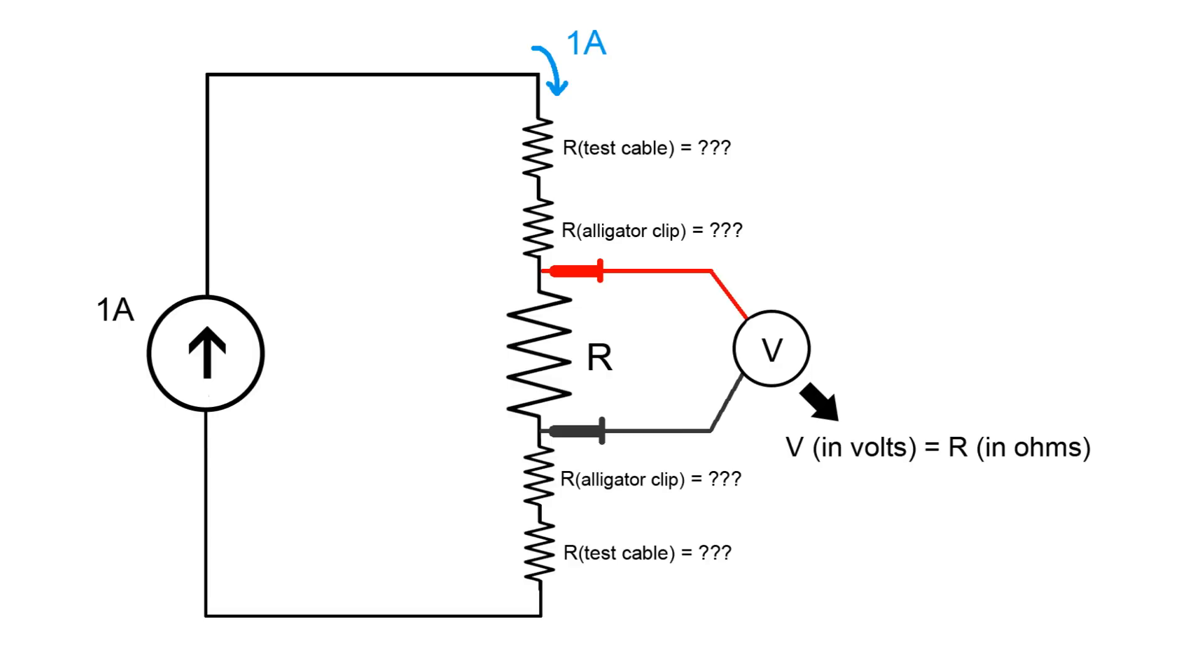And because the input impedance of the multimeter is so high, well into the megaohm range, almost no current flows into the multimeter, so the meter doesn't affect the circuit.